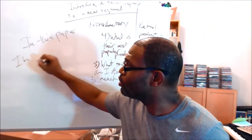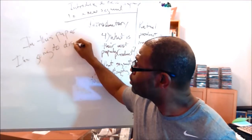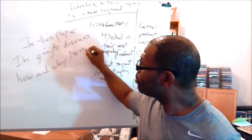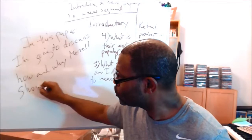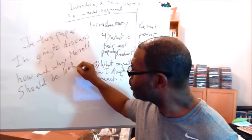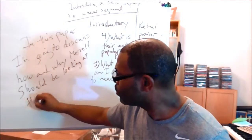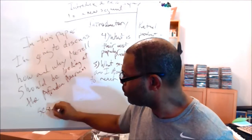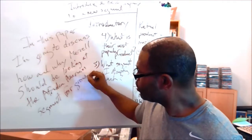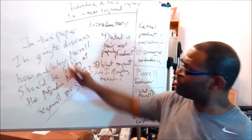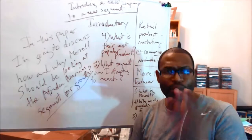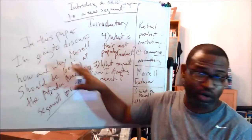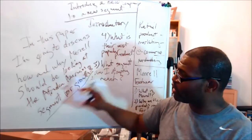So in this paper, I'm going to discuss how and why Merrill should be looking at the African-American segment for growth. So I have this one question over here, and I know it's crooked and it's hard to see, but by creating this statement, which I put a question mark at the end: in this paper, I'm going to discuss how and why Merrill should be looking at the African-American segment for growth.